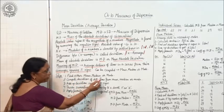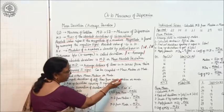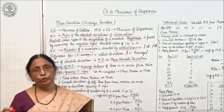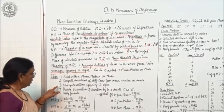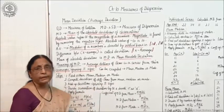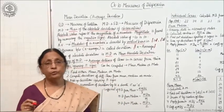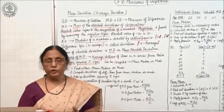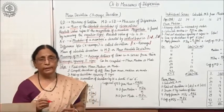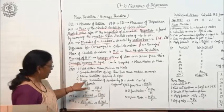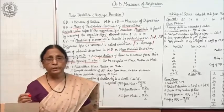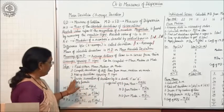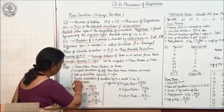Step two: compute deviations of different items from whichever average you chose — mean, median, or mode. Step three: add up the deviations ignoring plus and minus signs. Name these deviations D and find sigma D, that is the sum of all deviations ignoring signs. Step four: divide the summation of deviations by n, the number of items, and denote it as D-bar.